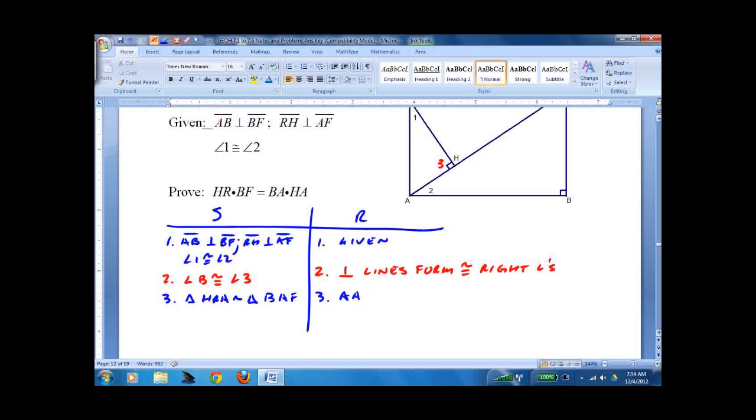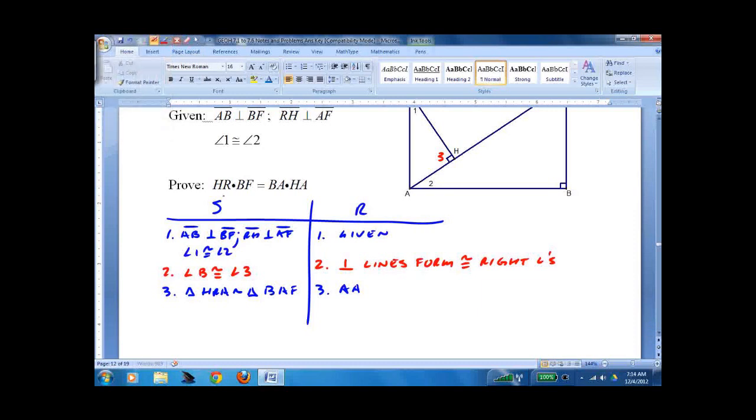Now I've got to write my proportion. So I look at what I'm trying to prove here. And HR. This is why I wrote HR first. And that's going to equal. HR lines up with BA. And HA here and HA here and here. It's right up here. Leaves only BF. HABF. And yes, they line up.